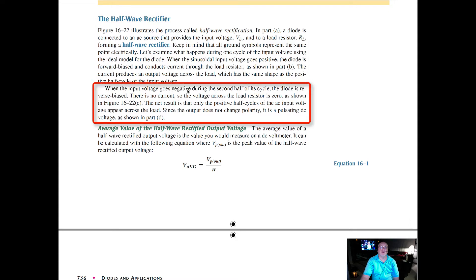When the input voltage goes negative during the second half of its cycle, the diode is reverse biased, so there's no current. The voltage across the load resistor then is zero, as shown in C. The net result is that only the positive half cycles of the AC input voltage appear across the load.